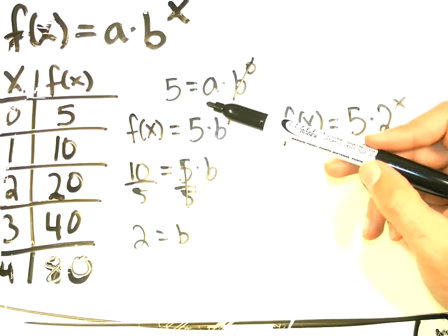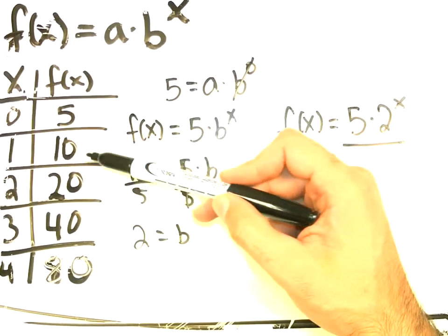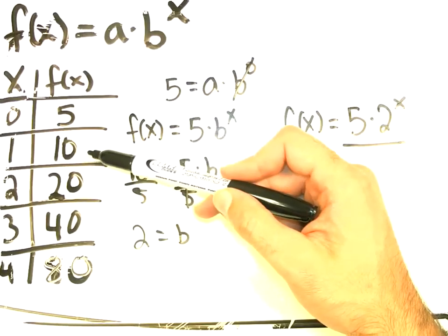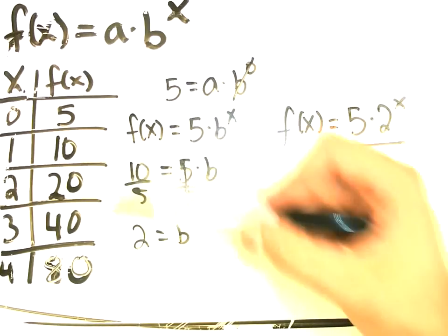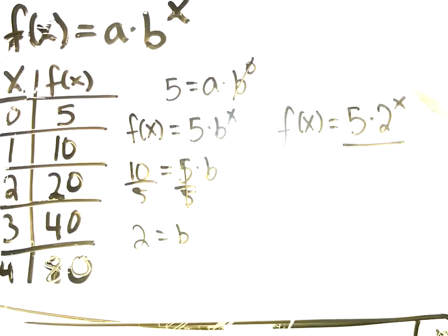Yep, the next one is to choose another point. We chose this point because it's the next easiest one to plug in. That gave us 2. And then we just rewrote the equation. Good.